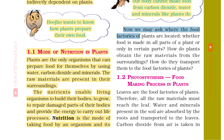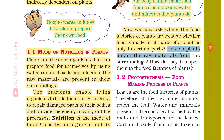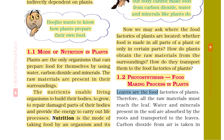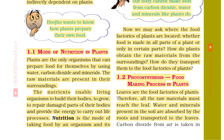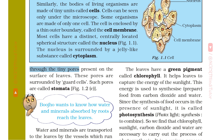Now we may ask where the food factories of plants are located, whether food is made in all parts of a plant or only in certain parts, and how plants obtain the raw materials from the surroundings. Leaves are the food factories of plants. Therefore, all the raw materials must reach the leaf. Water and minerals present in the soil are absorbed by the roots and transported to the leaves. Carbon dioxide from air is taken in through tiny pores present on the surface of leaves. These pores are surrounded by guard cells and are called stomata.